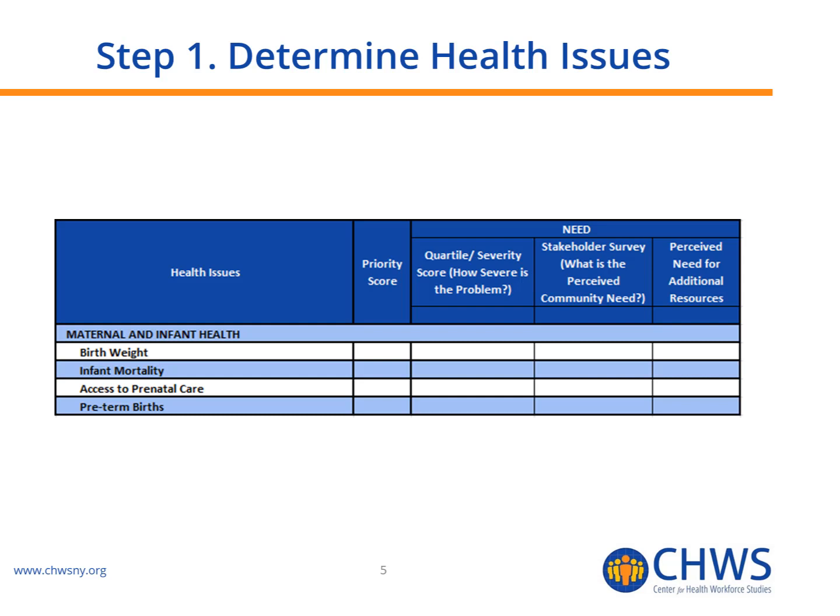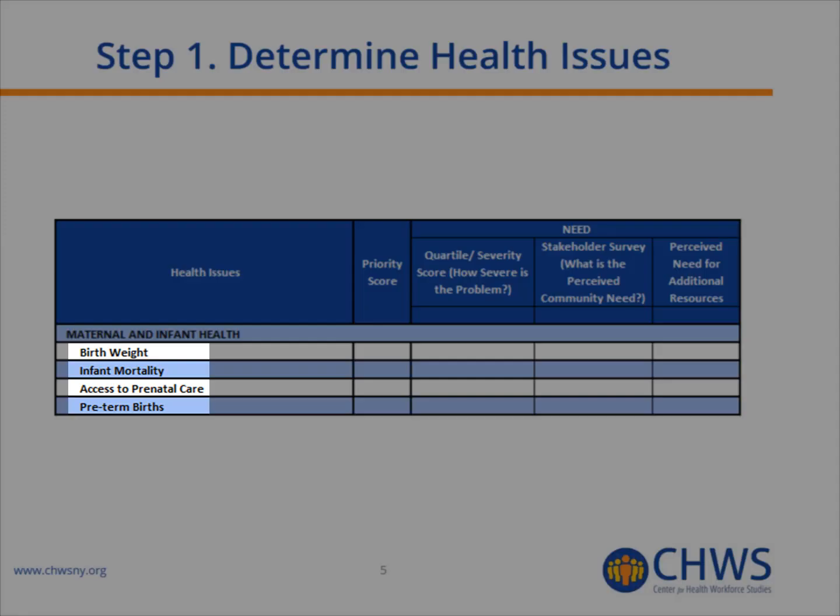The number of health issues may vary, or funders may limit your focus to particular community issues. For example, state programs for maternal and child health may want you to focus on infant outcomes such as birth weight, infant mortality, preterm births, and access to prenatal care.